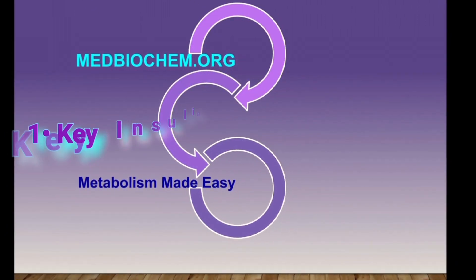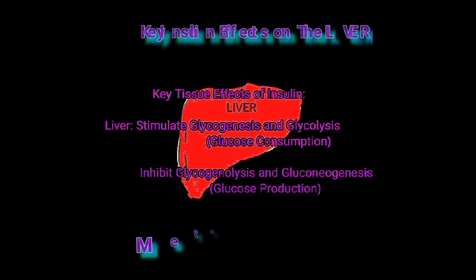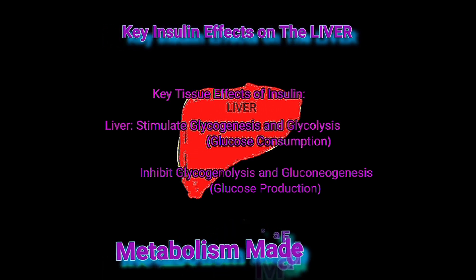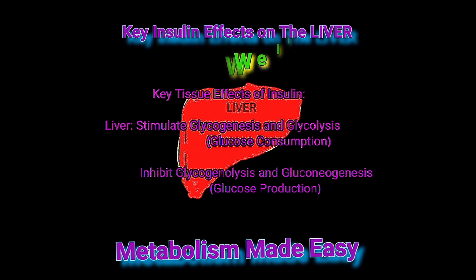Key insulin effects on the liver: starting with the liver, insulin will stimulate glycogenesis (glycogen synthesis) and glycolysis. These two glucose-consuming pathways will use up nearly 60% of all the glucose present in the bloodstream after a meal.